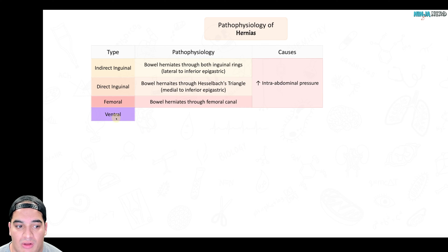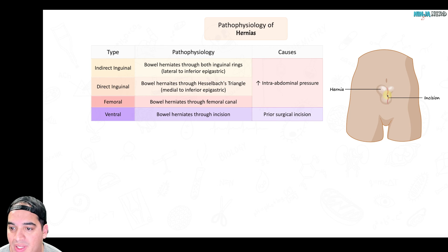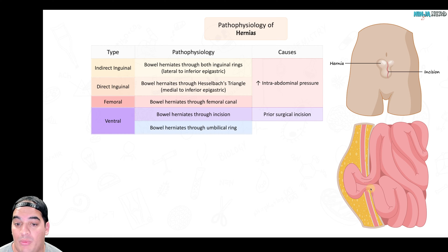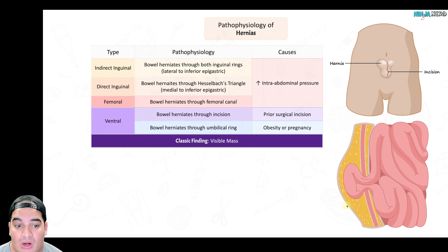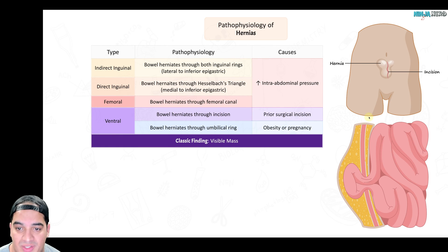The last type is ventral hernias, which occur on the abdominal wall. They can herniate through a prior surgical incision, known as an incisional hernia. They can also herniate through the umbilical ring — very common with obesity and pregnancy where there is a weak linea alba. Regardless of etiology, you'd typically see a visible and relatively painful palpable mass, whether it's inguinal, femoral, incisional, or umbilical.